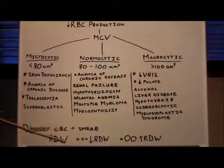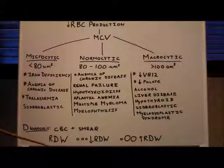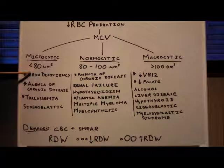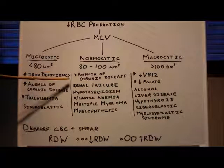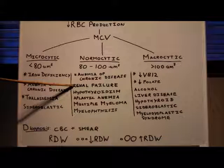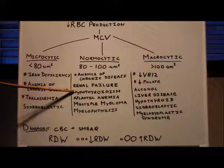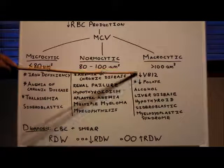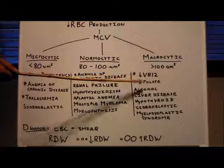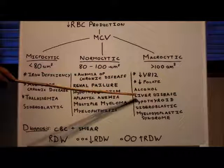After you order these, you order other tests based on what you need. You can get iron studies. You can look at creatinine, which is a marker of kidney disease. You can look at your thyroid hormone, your vitamin B12 level, your folate level. You can look at liver function tests and so on.